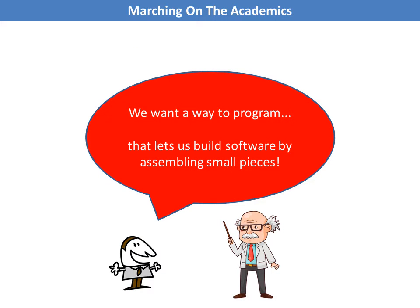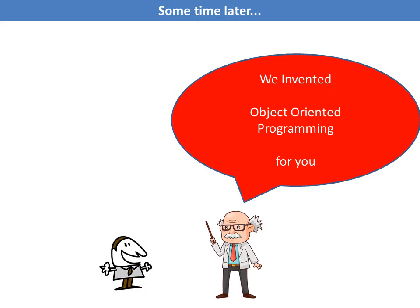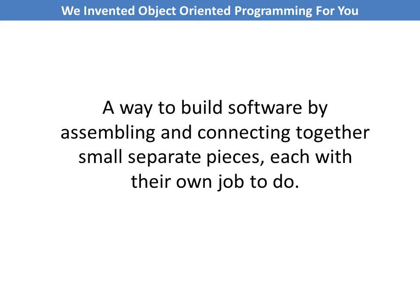So the software developers marched up to the gates of the computer science universities and said: we want a new way to program that lets us build our software by assembling and connecting small separate pieces. And the academics said, OK, just let us go away and think about it for a while. And eventually they came back and said: we've invented object-oriented programming for you. It's a way to build software by assembling and connecting small separate pieces, each with their own job to do. At its heart, that's what object-oriented programming really is, and that's why it was invented.